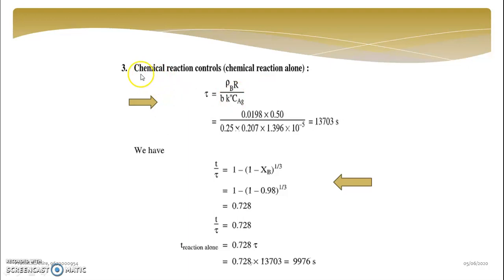Then chemical reaction control. Here formula is very easy. Rho B into R upon B K double dash into CAG is the formula. If you compare the previous answer, it is more than twice. It means chemical reaction is providing more resistance that you can take as a conclusion from this calculation.